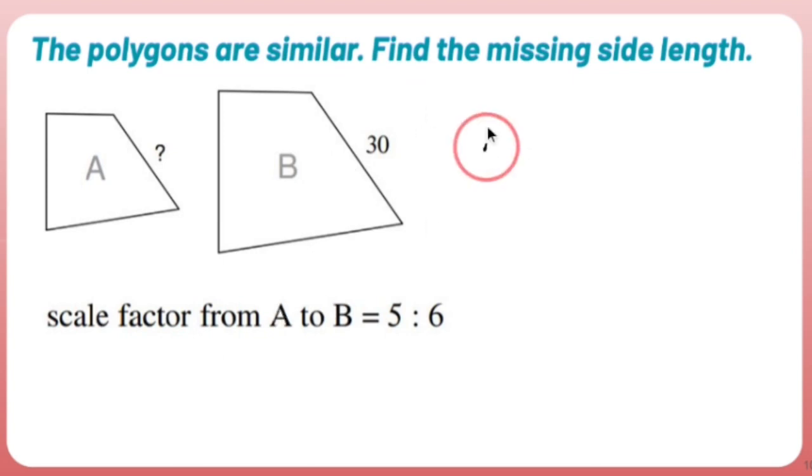It's asking me to do A to B, so I'm going to set a proportion, which is a fraction equaling a fraction. A to B is 5 to 6. That's going to be equal to A, which I don't know, so I'll call it X, over 30.